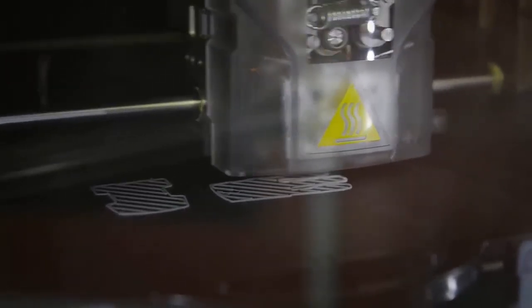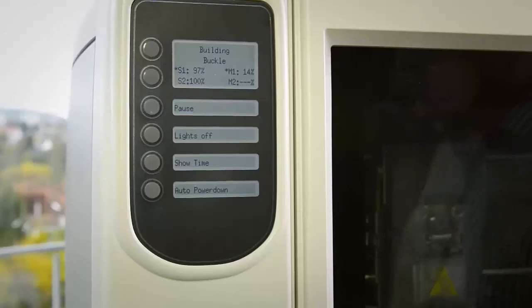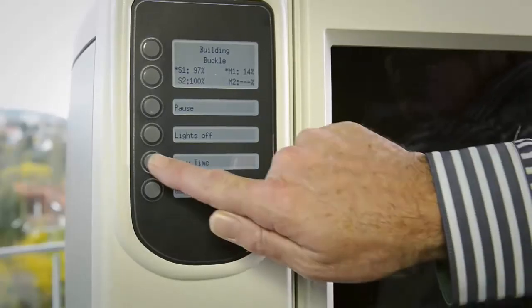The print job starts by laying down a few layers of soluble support material as base fixed to the tray and then applies model material and soluble material as defined in the print job.